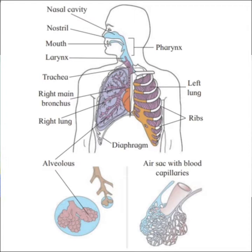First, the vestibule is the proximal part. Its skin has hairs for trapping the dust particles and filtering the inhaled air. Then the second one is the respiratory part, also known as the conditioner. It is the middle highly vascular part which warms and moistens the inhaled air. And the last one is the olfactory or sensory chamber. It is the uppermost part which is lined by olfactory epithelium for detection of smell.